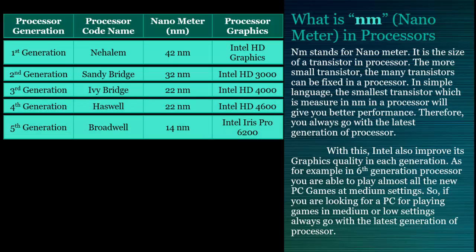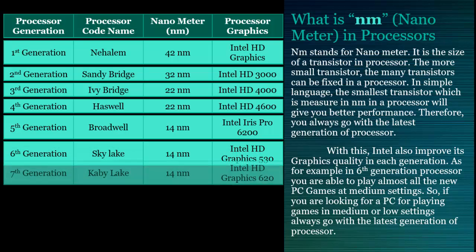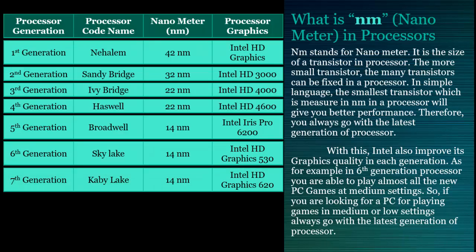The fifth generation processor, also known as Broadwell, is a 14 NM processor with Intel Iris Pro 6200 graphics. The sixth generation, called Skylake, is also a 14 NM processor with Intel HD Graphics 530. The seventh generation, the latest at this time, has the codename Kaby Lake — it is a 14 NM processor with Intel HD Graphics 620. Using this graphics chip you can easily play all the latest games, though not on high settings, but comfortably on medium and low settings.